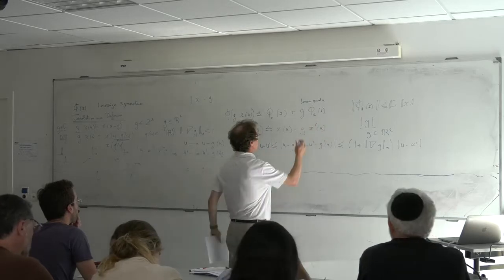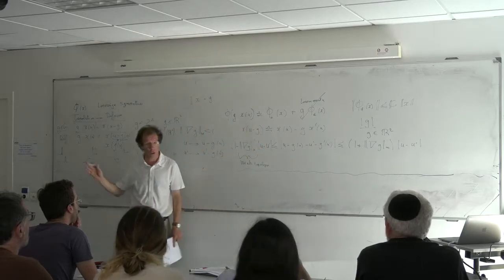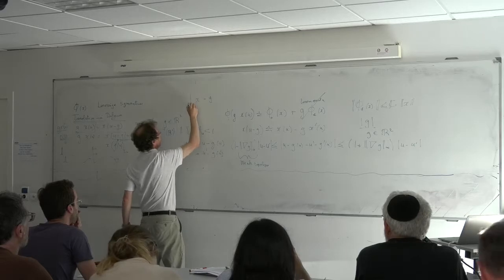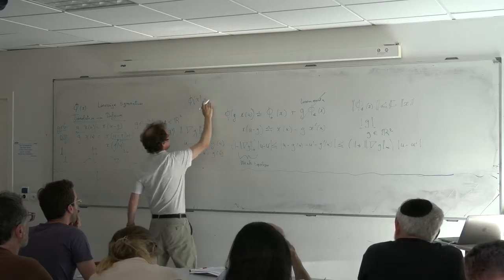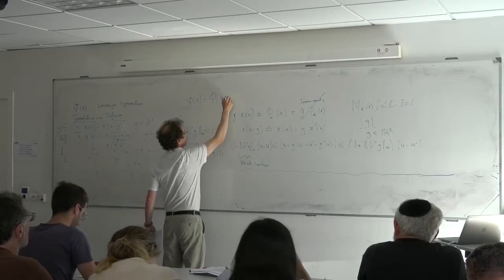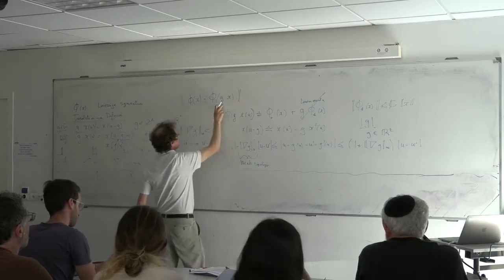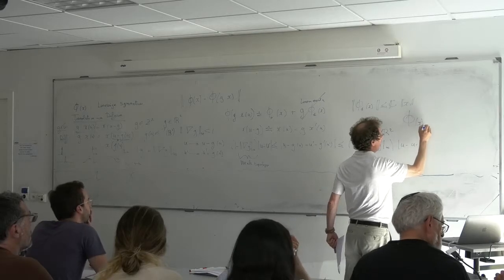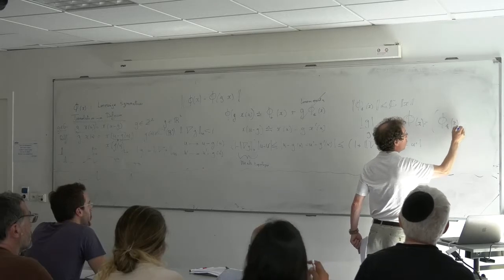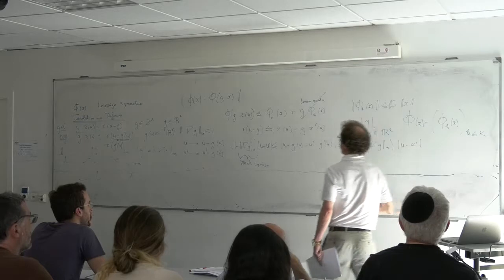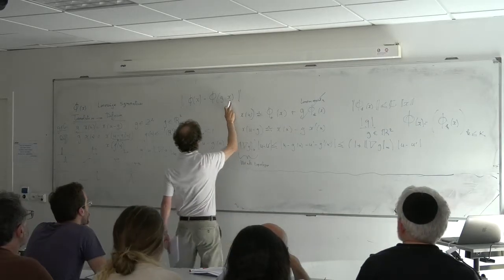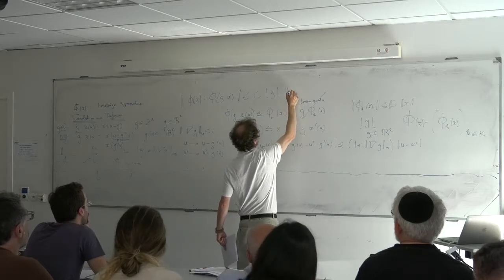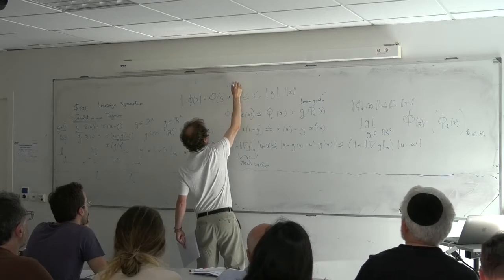To get that kind of property, what you want is that phi of X — if you look at the action of G as a Euclidean norm — this is a Euclidean norm over a vector. Phi of X is not a scalar, it's my representation — a whole vector of descriptors, what people call features. What I want is that when G acts over X, my change of variable is essentially Lipschitz.